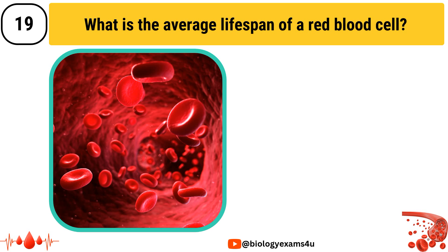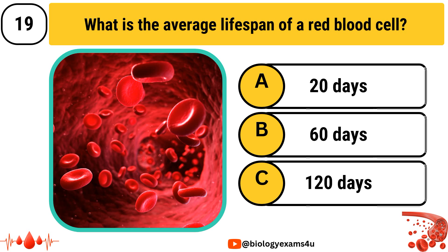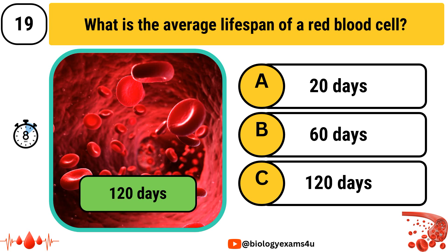What is the average lifespan of a red blood cell? Option A: 20 days, Option B: 60 days, Option C: 120 days. The answer is Option C, 120 days.